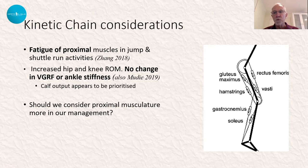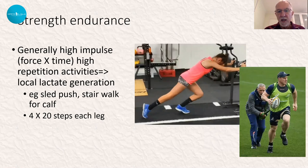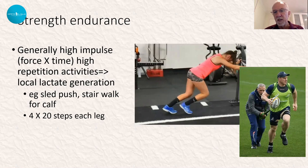Of course we do a lot in strength endurance in terms of high impulse — force by time — things such as sled pushes, four sets of 20. I like to see 20 reps on the right leg first then turn around 20 reps on the left leg, so that way we're getting a true lactate demand out of the muscles.